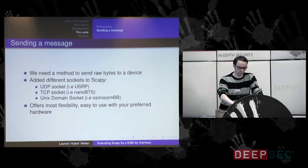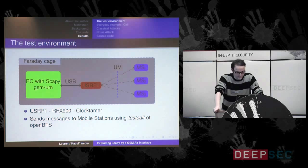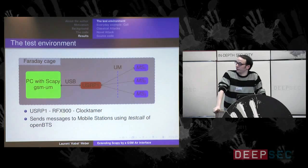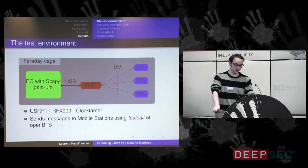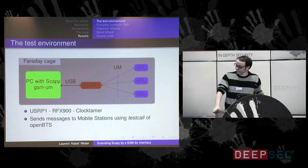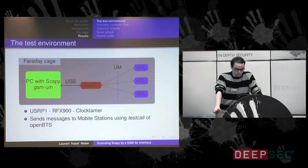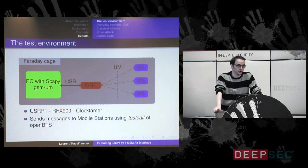Now the boring stuff is over and we come to the more interesting part. How did I test all this and what was my test setup? I had a Faraday cage. Inside I was running my PC with my Scapy GSM add-on, connected over USB to the USRP. And this was connected over the Um interface to my mobile phones. Here are the details of my USRP: I'm only using one data board, an RFX 900. It's enough for testing, but if you want to run a full network you should have two data boards.